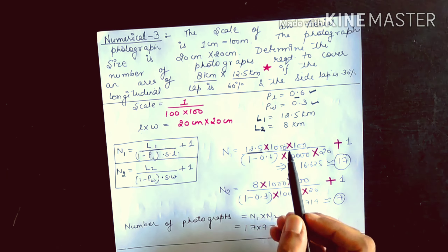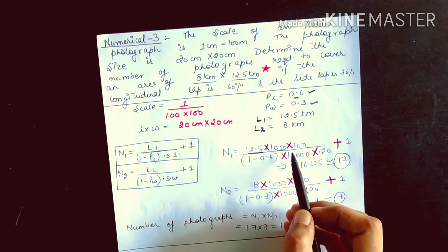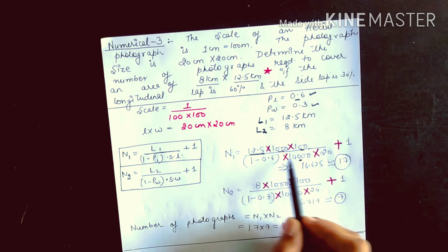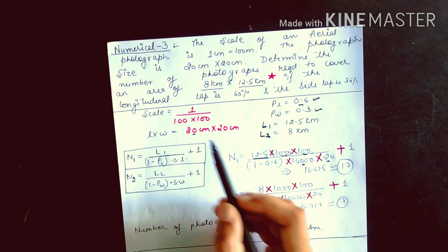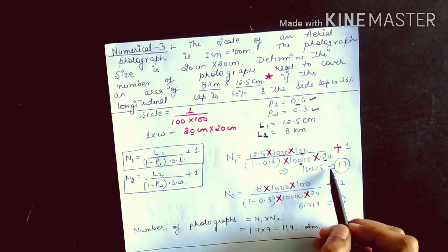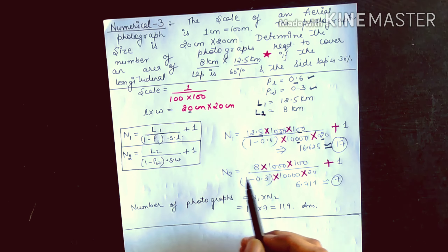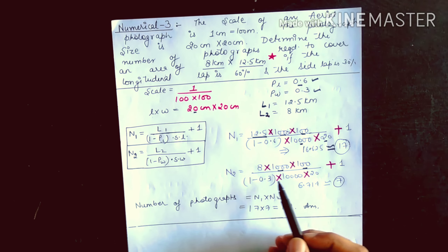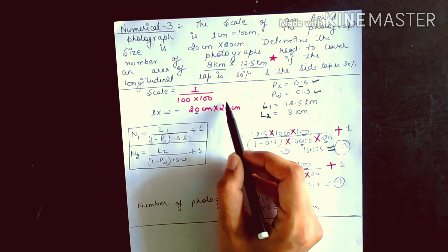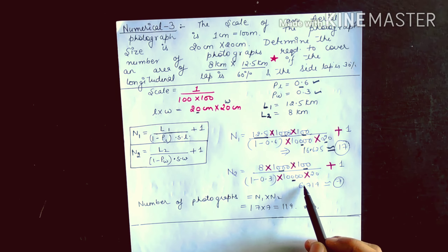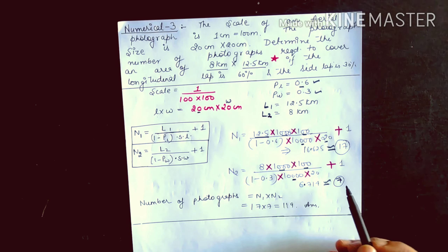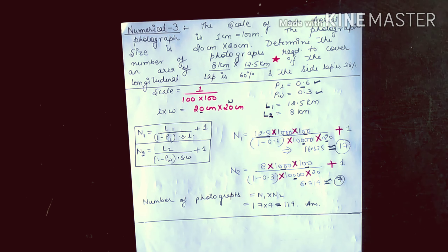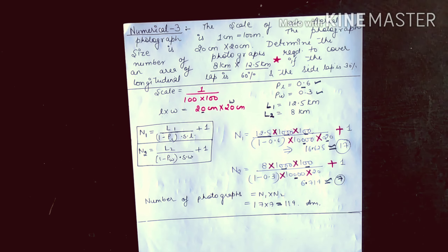For N1: L1 = 12.5 km, first converted to meters then to centimeters, placed in the formula N1 = L1 / [(1 − PL) × S × l] + 1, giving N1 = 17. For N2: L2 = 8 km, converted similarly, N2 = L2 / [(1 − PW) × S × w] + 1 = 6.714 + 1, rounded up to 7. Therefore total photographs N = N1 × N2 = 17 × 7 = 119 photographs. This completes the numerical part of flight planning. Thank you.